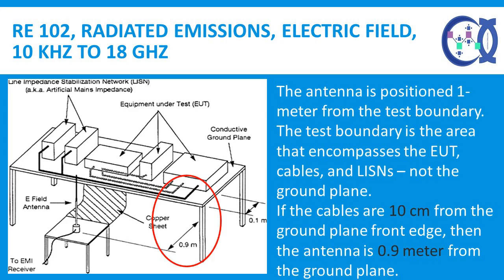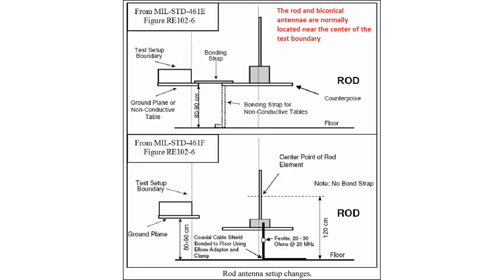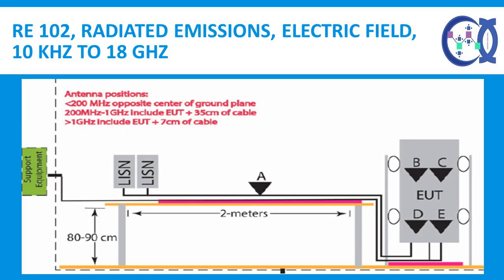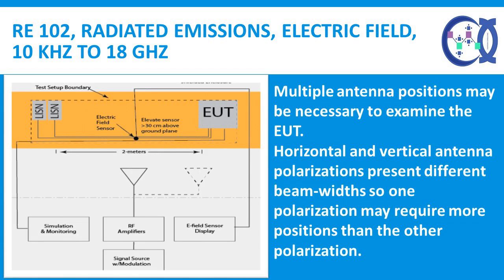The antenna is positioned 1 m from the test boundary — the area encompassing the EUT, cables, and LISN, not the ground plane. If cables are 10 cm from the ground plane front edge, the antenna is 0.9 m from the ground plane. The rod and biconical antennae are normally located near the center of the test boundary. The double ridge horn antenna is positioned so that the EUT plus 35 cm of cable is within the antenna beam width for 200 MHz to 1 GHz, and the EUT plus 7 cm of cable for 1 GHz to 18 GHz. Horizontal and vertical antenna polarizations present different beam widths, so one polarization may require more positions than the other.